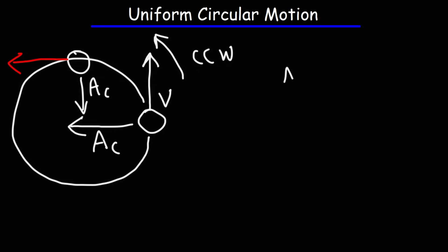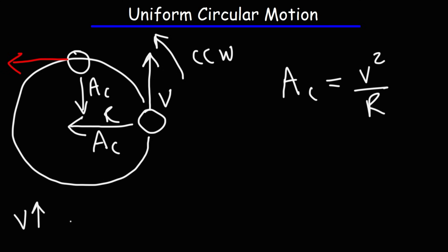The centripetal acceleration is equal to the square of the velocity divided by the radius of the circle. So as you double the velocity — 2 squared is 4 — the centripetal acceleration increases by a factor of 4.